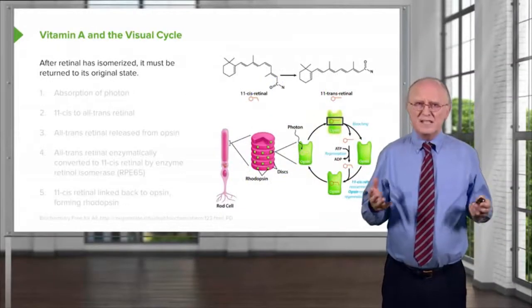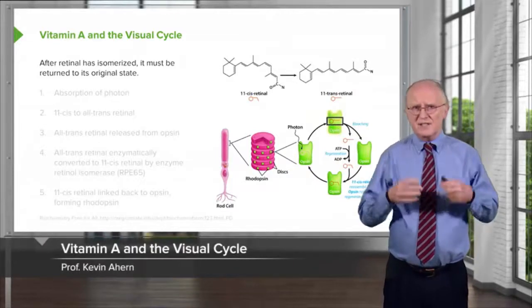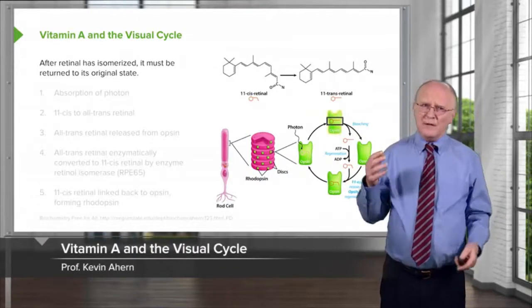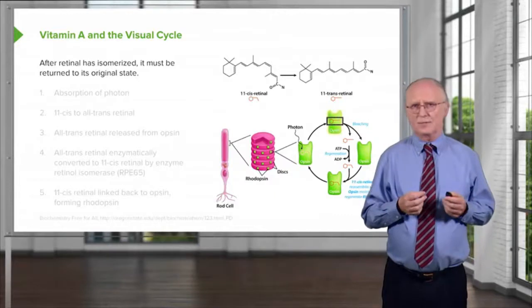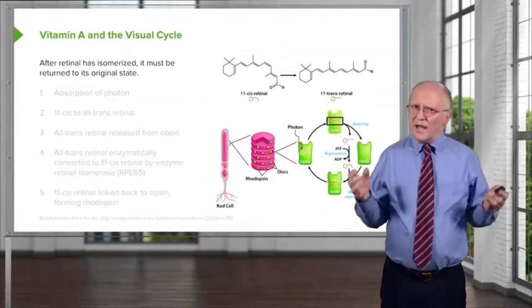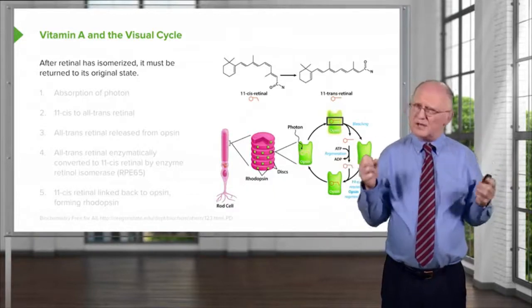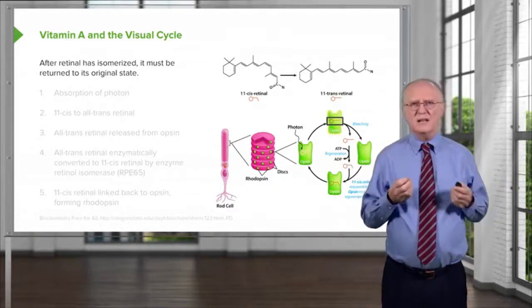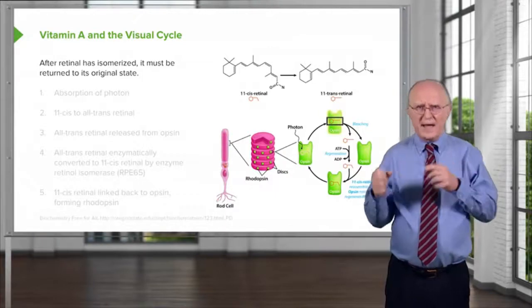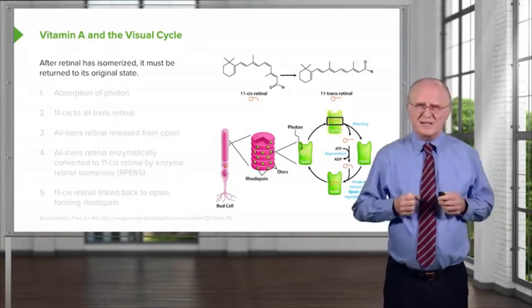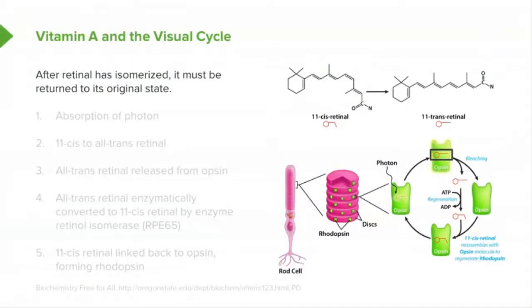Now, after vitamin A has been isomerized from the 11-cis to the trans form, it has to be reconverted back to the 11-cis form. I told you that light can cause that interconversion to occur, that is it can go from cis to trans and trans to cis, but it turns out that's not what the cell does to get the trans form back, and it's kind of a complicated process. The process is known as the visual cycle, and I'm going to describe it to you here.